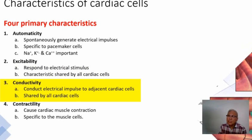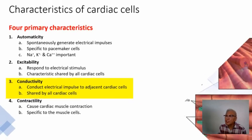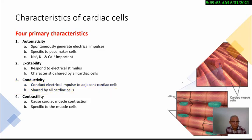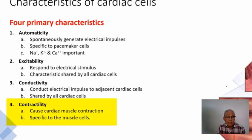Another characteristic of cardiac cells is conductivity — the ability to transmit electrical impulses from one area to another. They conduct electrical impulses to cardiac cells, and this is a characteristic that is shared by all cardiac cells.